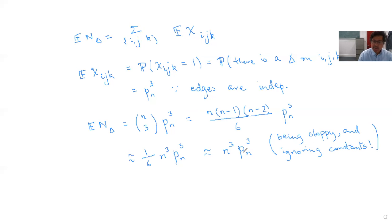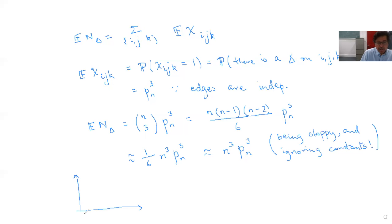This is the expected number of triangles and how it depends on p_n. We are going to consider a particular scaling regime for these probabilities. As I mentioned last time, if you plot the edge probability p against the probability of seeing a specific subgraph such as a triangle, then for large n this shows a sharp transition from probabilities close to zero to probabilities close to one — not at some constant value like 0.3, but in some suitable scaling.